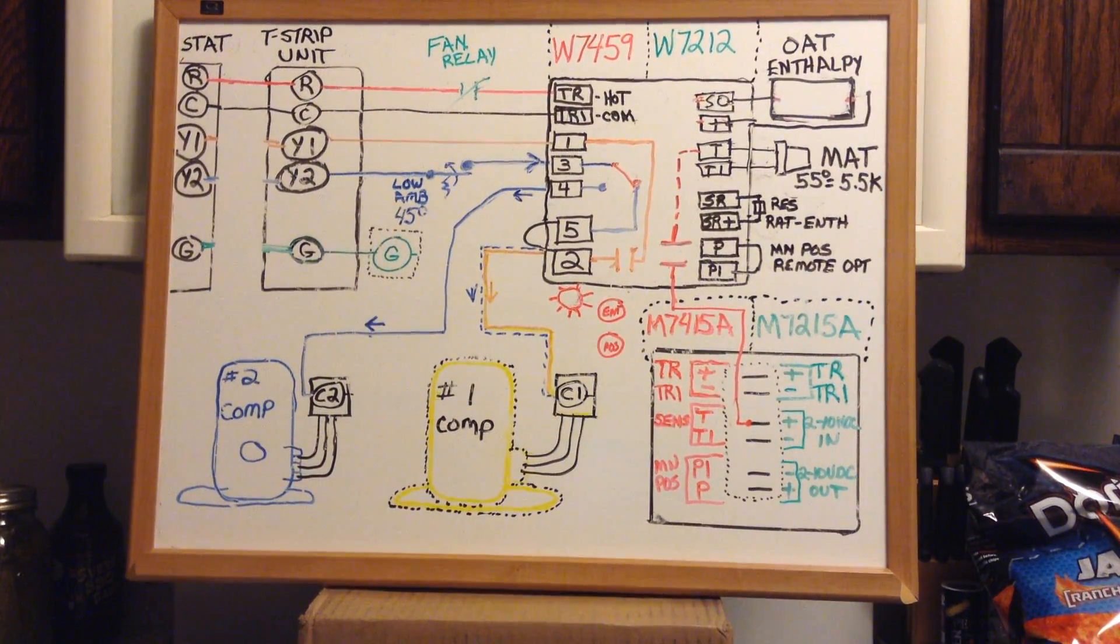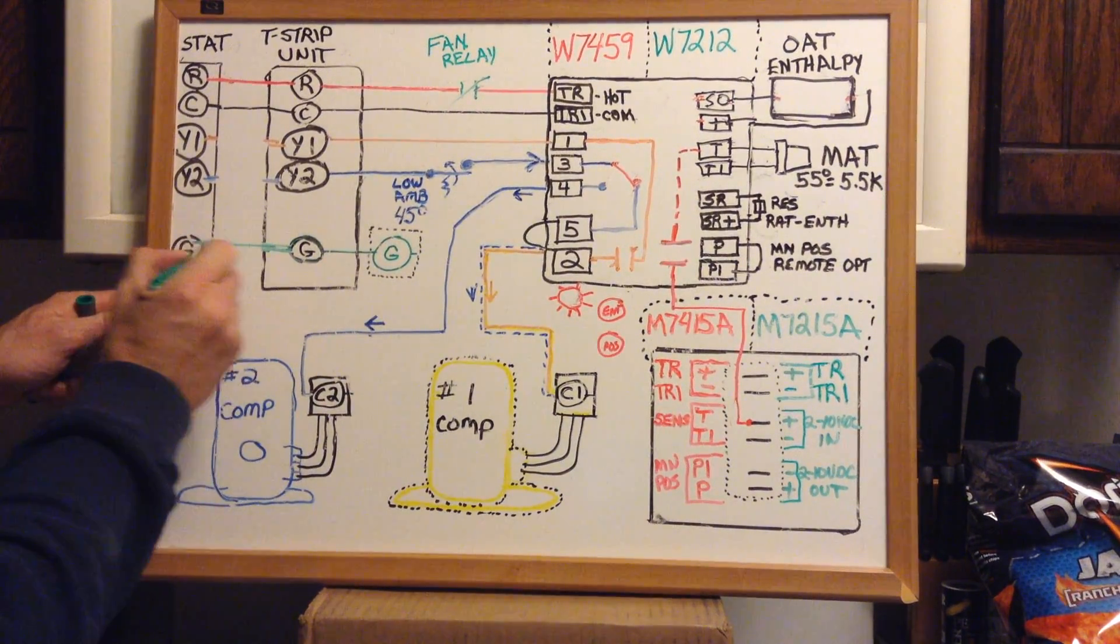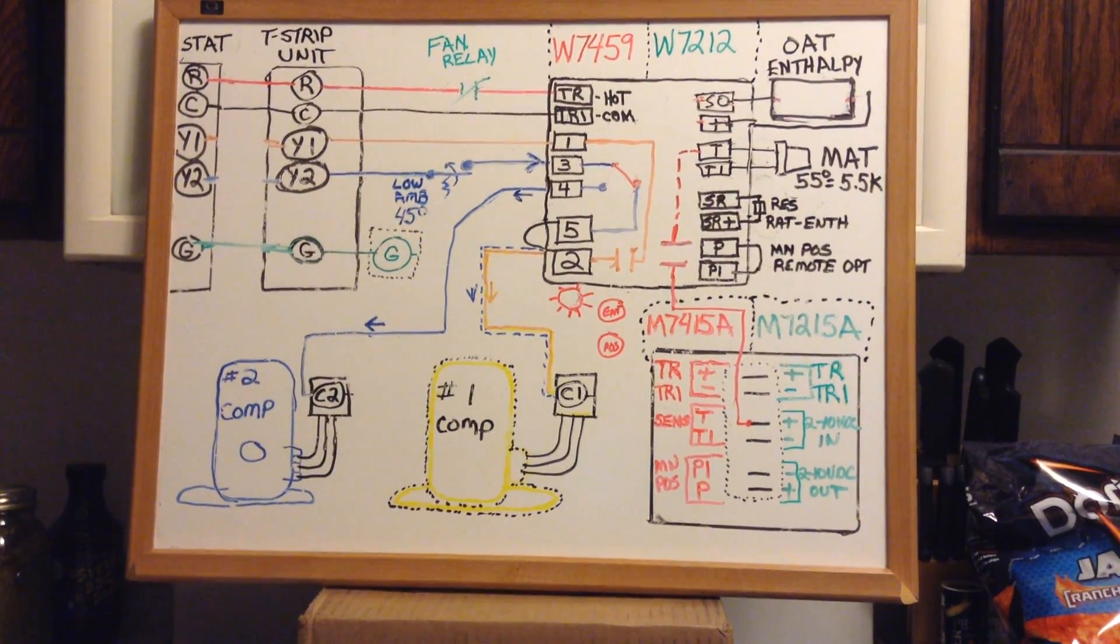We're assuming that the unit has power to the unit, to the R terminal. The thermostat is powered up, but we don't have a call for fan or any calls for cooling. Assuming a Carrier rooftop unit for this conversation, if we get a call for cooling, we'll simulate a call for the G, for the fan. We energize the G on the terminal strip on the unit, and then we would energize the relay for the fan, which would turn on the indoor fan, the blower.